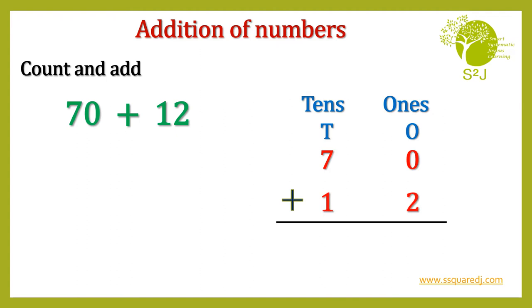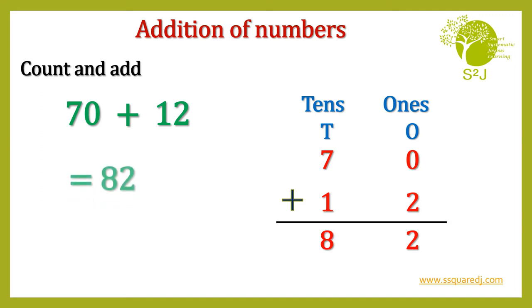Let's add them. 0 plus 2 is 2 and 7 plus 1 is 8. So 82. So 70 plus 12 is 82.